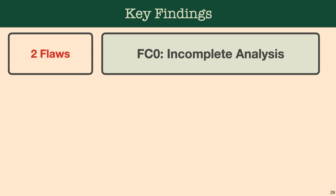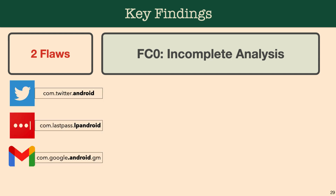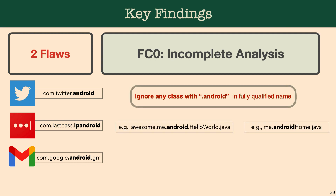In addition to these five flaw classes, we found another block — flaw class zero — which is about incomplete analysis of the input. Many applications were not being properly analyzed or were simply not being analyzed completely. Surprisingly, we found some cryptodetectors that were ignoring any class which had ".android" in the fully qualified name, so apps like Twitter Android or LastPass were completely ignored in the analysis process.